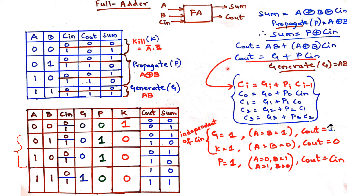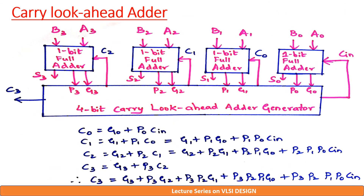From these expressions we can extend to a 4-bit adder. In general, the carry expression is: Ci = Gi + Pi·C(i-1). A 4-bit adder will have carry output variables C0, C1, C2, C3. C0 = G0 + P0·Cin. C1 = G1 + P1·C0; substituting C0, C1 is expressed only in terms of Cin. Similarly, C2 = G2 + P2·C1, and C3 = G3 + P3·C2, each simplified to depend only on Cin.